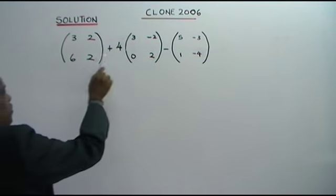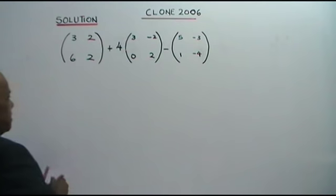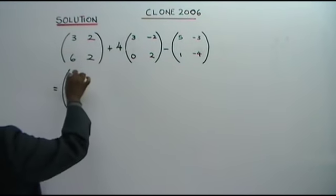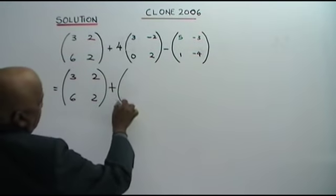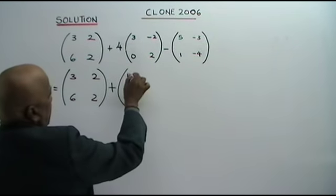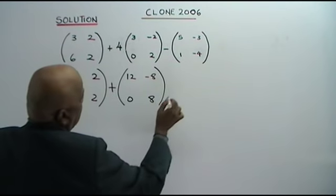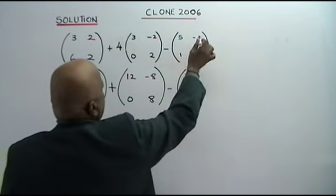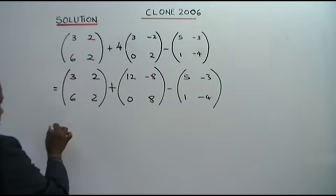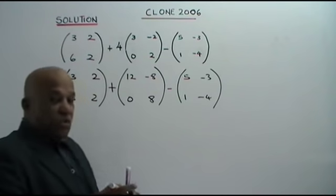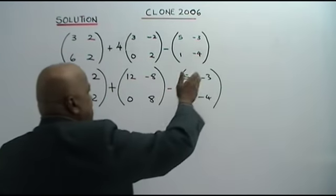The problem is: 3 2, 6 2 plus 4 times 3 negative 2, 0 2 minus 5 negative 3, 1 negative 4. So we write 3 2, 6 2 plus 4 times 3 is 12, 4 times negative 2 is negative 8, 4 times 0 is 0, 4 times 2 is 8, minus 5 negative 3, 1 negative 4. Now we add or subtract the corresponding numbers—first number with first number, second number with second number.